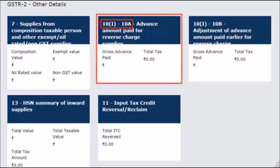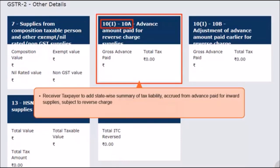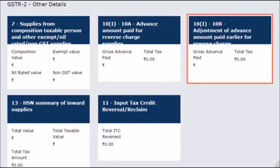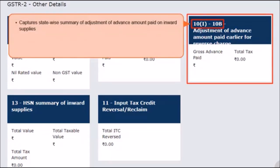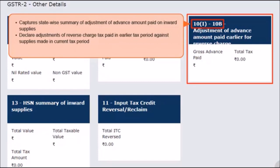The next tile covers Section 10A, which relates to the advance amount paid against reverse-charged supplies. Here, the receiver taxpayer needs to add the statewide summary of tax liability accrued from advances paid for inward supplies subject to reverse charge. These will include advances paid to both registered and unregistered taxable persons. Similarly, in the next tile of Section 10B, the statewide summary of adjustment of advance amount paid on inward supplies has to be declared. It is for declaring adjustments of reverse-charged tax paid in an earlier tax period at the time of receipt of advance for which supplies are made in the current tax period. These are the adjustments of advances that were declared in earlier tax periods under Section 10A.